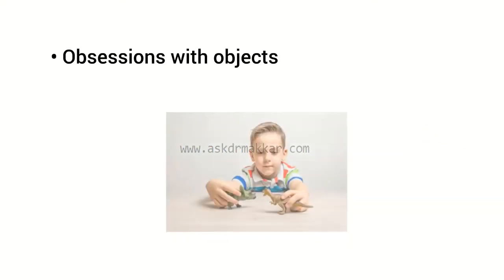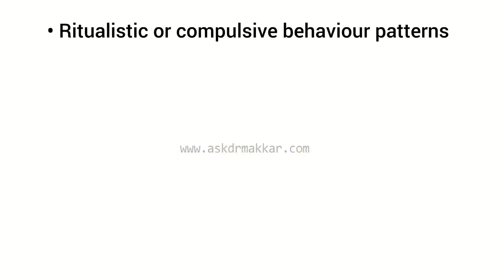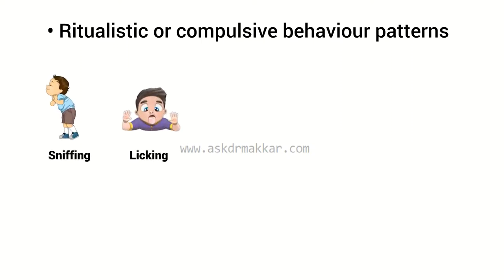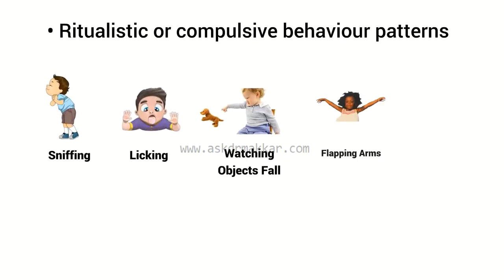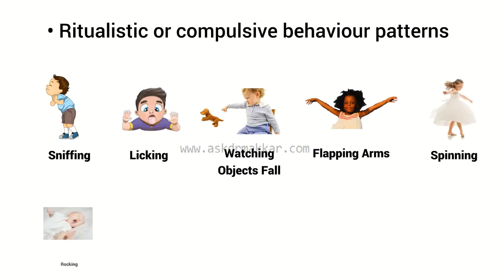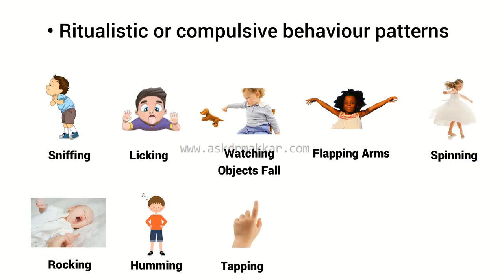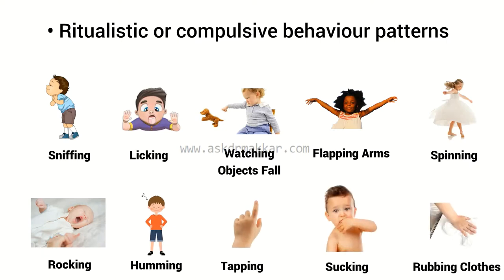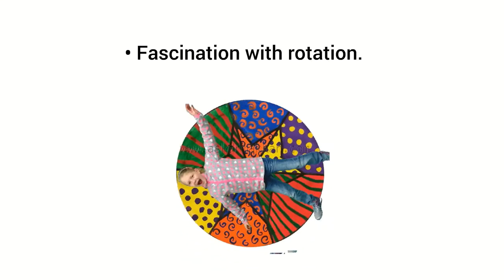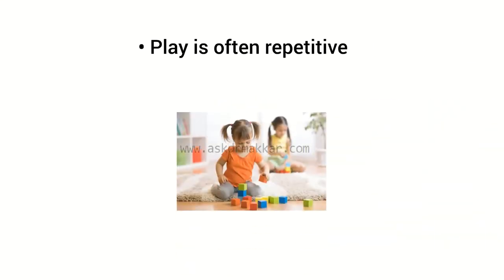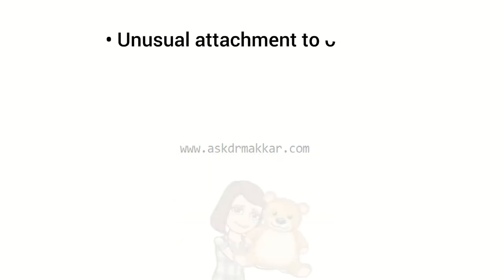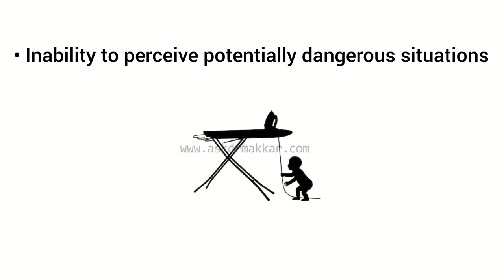Behavior signs and symptoms: obsessions with objects, ideas, or desires; ritualistic or compulsive behavior patterns including sniffing, licking, watching objects fall, flapping arms, spinning, rocking, humming, tapping, sucking, rubbing clothes, and fascination with rotation. Play is often repetitive. Unusual attachment to objects; perfectionism in certain areas; inability to perceive potentially dangerous situations.